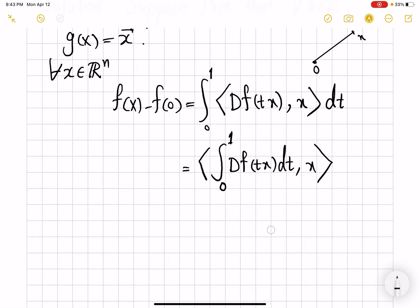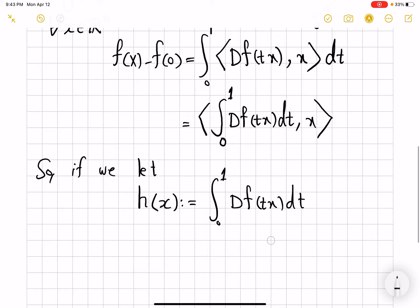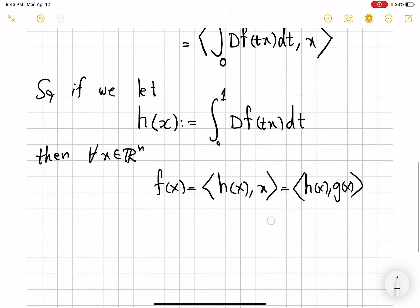So then, if we let h(x) to be just this quantity, df of tx dt, then for every x in ℝⁿ, f(x) is h(x) dot x, but x is our g(x). So we have solved our problem in this case.